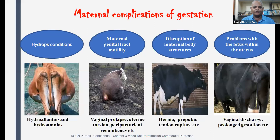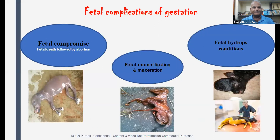Maternal complications of gestation include the hydrops condition, maternal genital tract motility problems, disruption of maternal structures like hernia, prepubic tendon rupture, and problems with the fetus within the uterus such as abnormal vaginal discharge or prolonged gestation. Fetal complications include fetal compromise followed by death, abortion, fetal mummification, maceration, and fetal hydrops conditions.